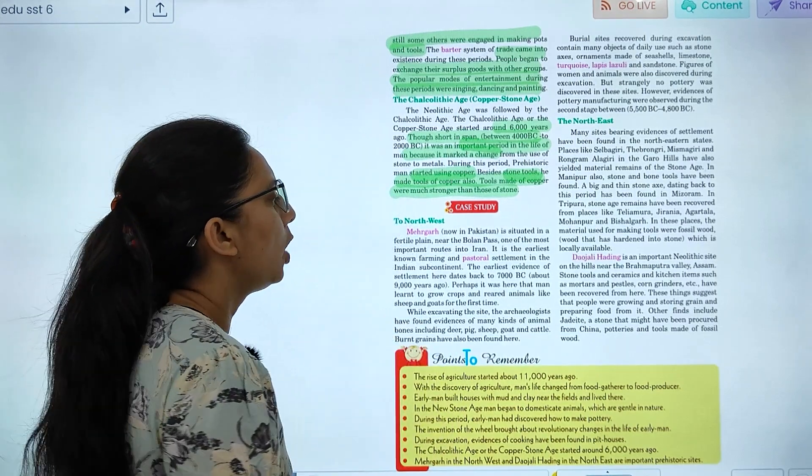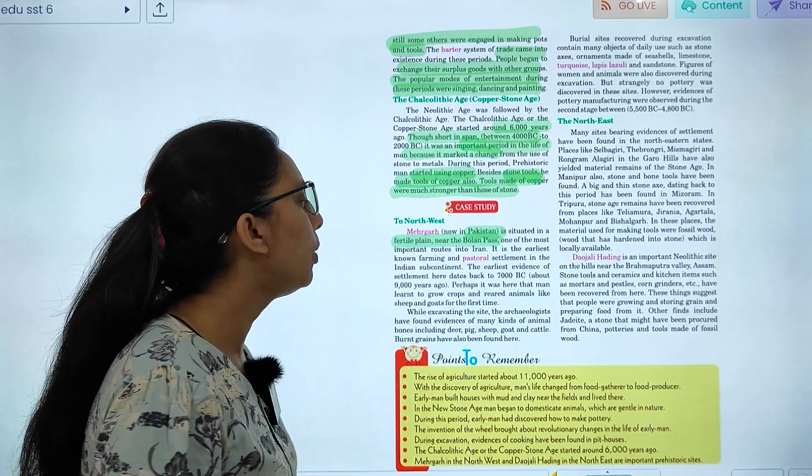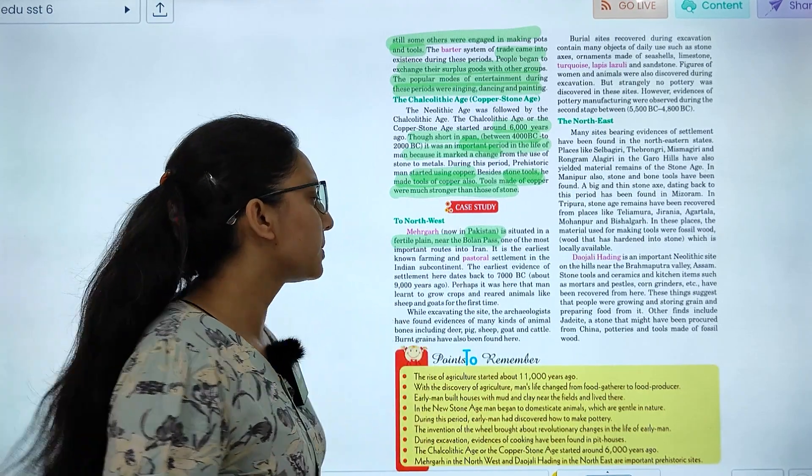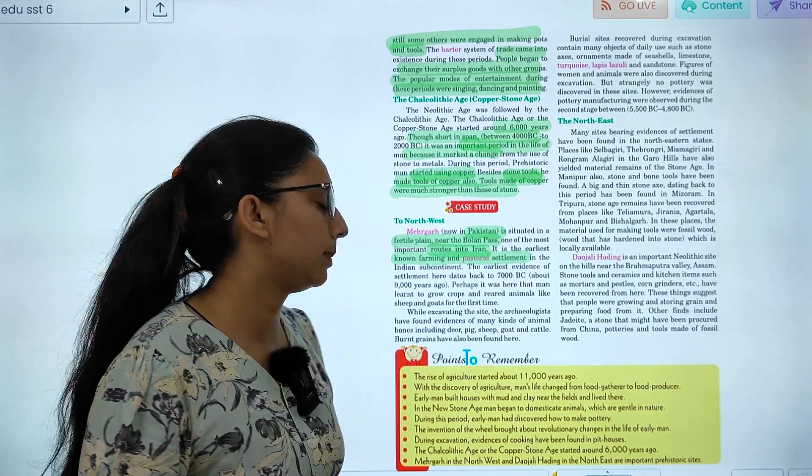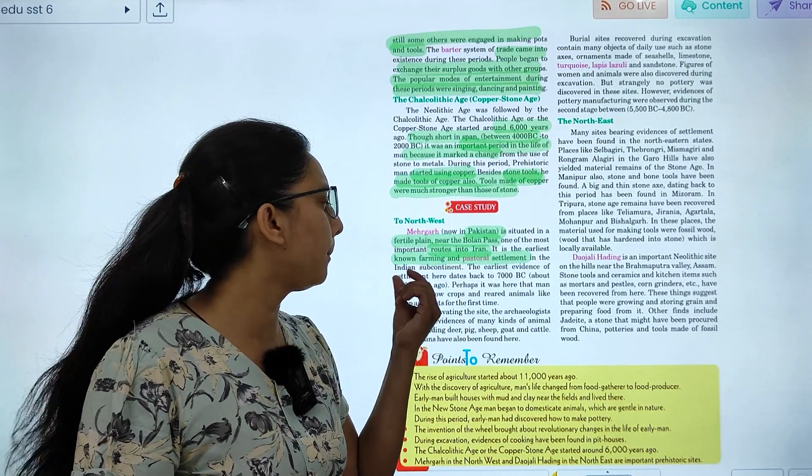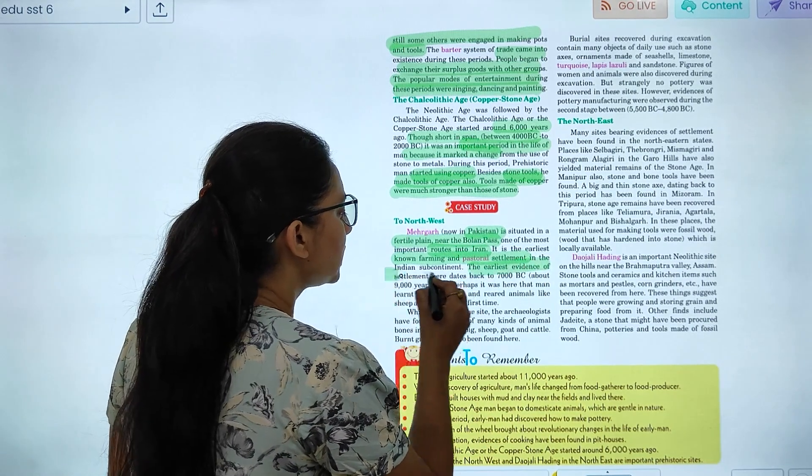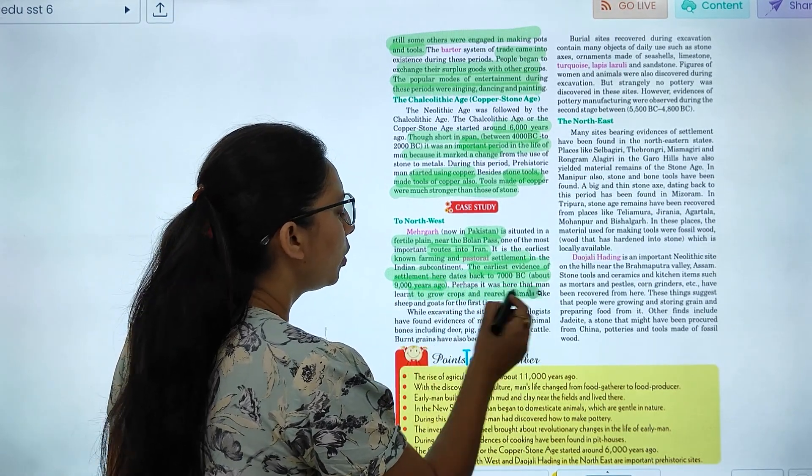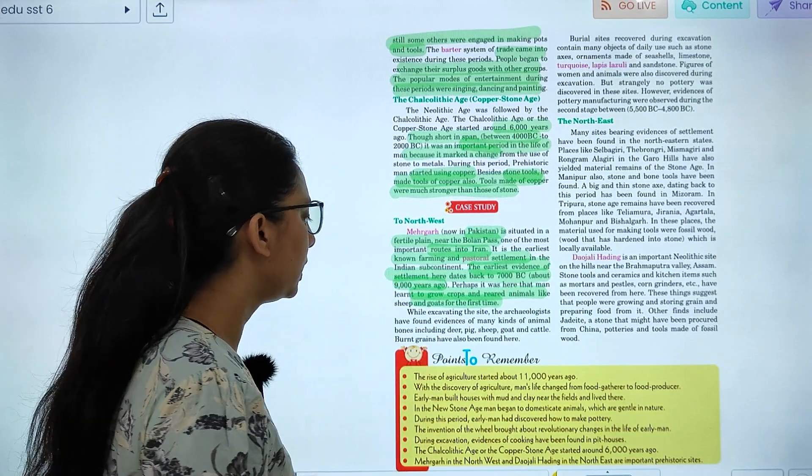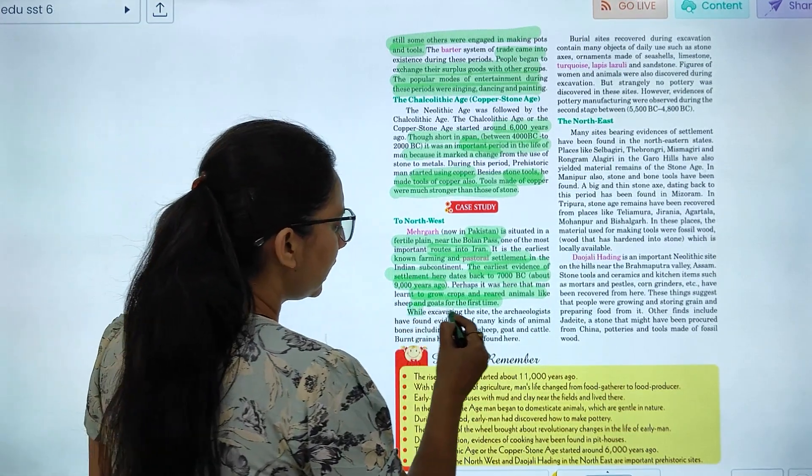There was a case study as part of northwest in Pakistan. It was the earliest known farming or pastoral settlement in the Indian subcontinent. The first farming and pastoral settlement, the earliest evidence of settlement dates back to 7,000 to 9,000 years ago. Here people grew crops and raised animals like sheep and goat for the first time.